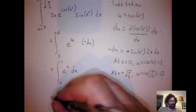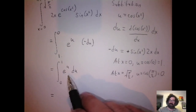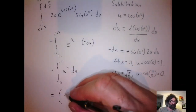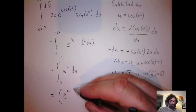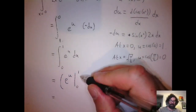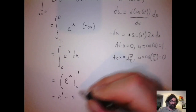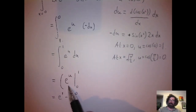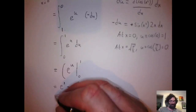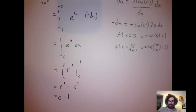Now this integral is straightforward since the antiderivative of e^u is simply e^u. We evaluate: [e^u]₀¹ = e¹ − e⁰ = e − 1. So this definite integral equals e − 1.